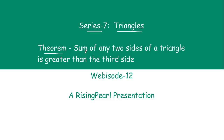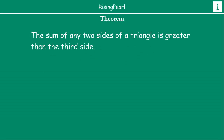This theorem is that the sum of any two sides of a triangle is greater than the third side. So basically, if you have two sides of any triangle, the sum of those two sides is greater than the length of the third side. We are talking about the lengths of the sides.